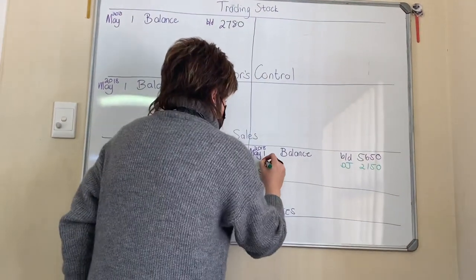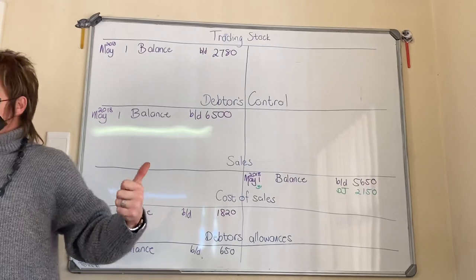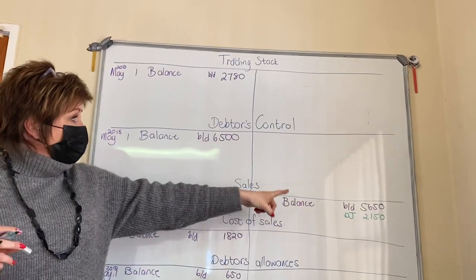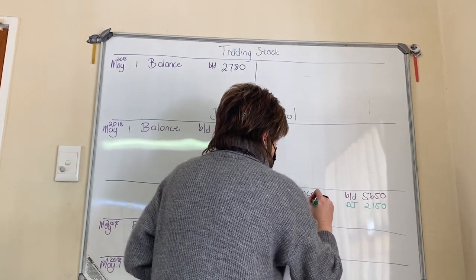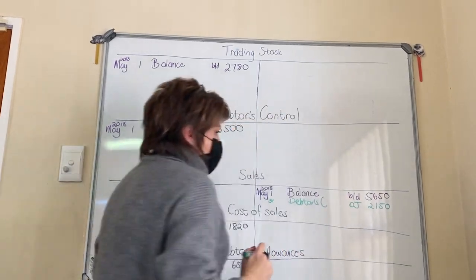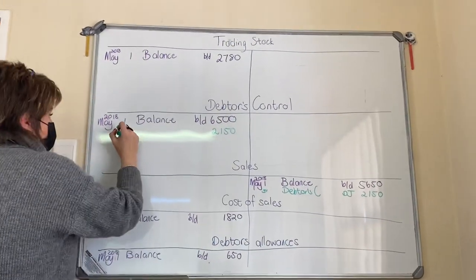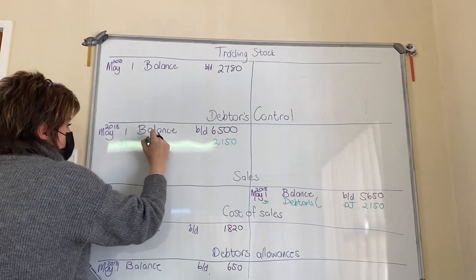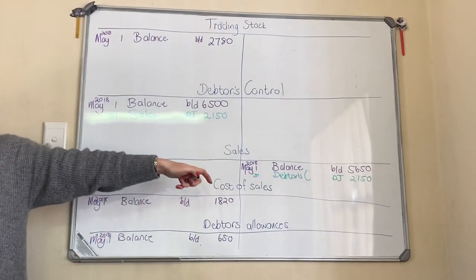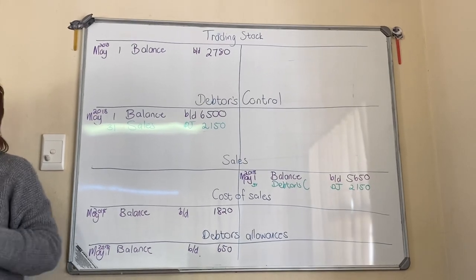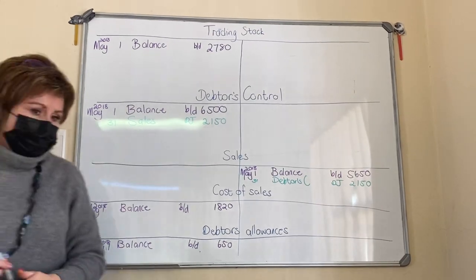This comes out of your debtors journal at the end of the month, May the 31st. We see this is sales, and it's sales to debtors. So I'm going to take it to debtors control as well — my contra account is debtors control. For every debit you must have a credit and vice versa. Credit side of sales because it's an income; debit side of debtors control because now they owe you more money — assets increase on the debit side.